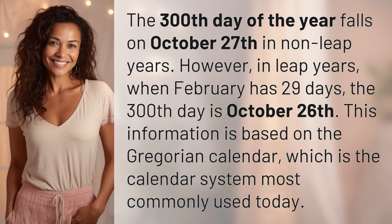The 300th day of the year falls on October 27th in non-leap years. However, in leap years, when February has 29 days, the 300th day is October 26th. This information is based on the Gregorian calendar, which is the calendar system most commonly used today.